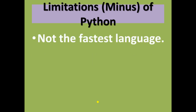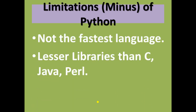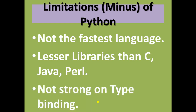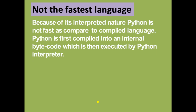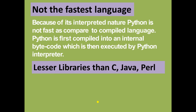Some limitations of Python are: it is not the fastest language, it has fewer libraries than C, Java, and Perl, and it is not strong on type binding. Because of its interpreted nature, Python is slower compared to compiled languages. Python is first compiled into internal bytecode which is then executed by the Python interpreter.